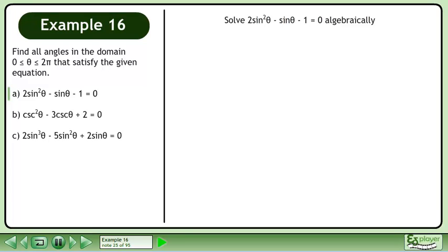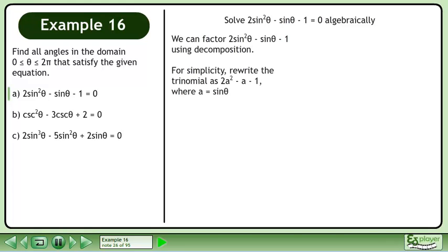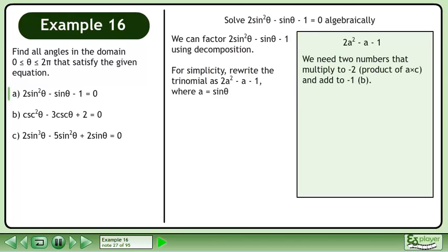Now we'll return to the original question: solve 2sin²θ - sinθ - 1 = 0 algebraically. We can factor this using decomposition. For simplicity, we write the trinomial as 2a² - a - 1 where a = sinθ. We need two numbers that multiply to negative 2, the product of a times c, and add to negative 1, the b value. The two numbers are negative 2 and positive 1.